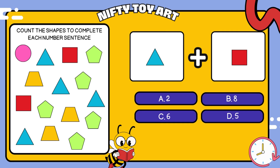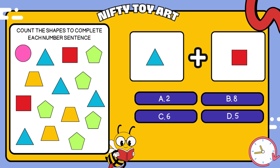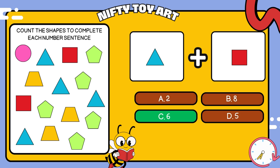I have a triangle plus square. How many all together? That's right, six.